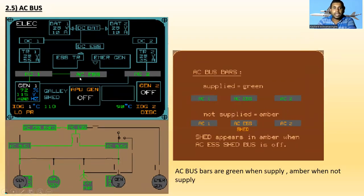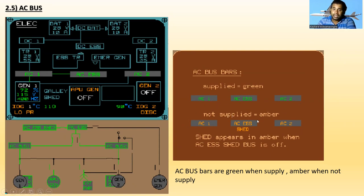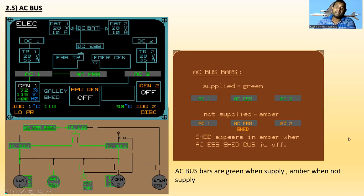Next is the AC bus. You can see AC Bus 1 and AC Bus 2 with the line contactors and AC essential bus pathways. When the AC bus is supplying, it shows green — AC1, AC Essential, AC2. When not supplied, it becomes amber. AC1 shed, AC essential shed, and AC2 shed appear in amber when the AC essential shed bus is off. AC bus bars are green when supplying and amber when not supplying.